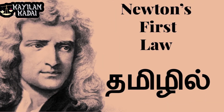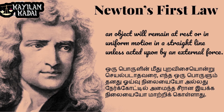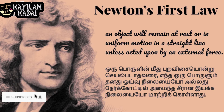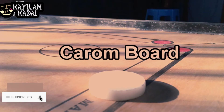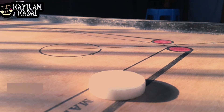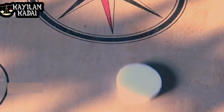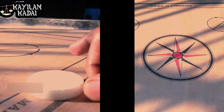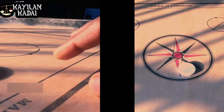Newton's first law says that an object will remain at rest or in uniform motion in a straight line unless acted upon by an external force. This is a practical example. An object will remain at rest or in uniform motion in a straight line unless acted upon by an external force.